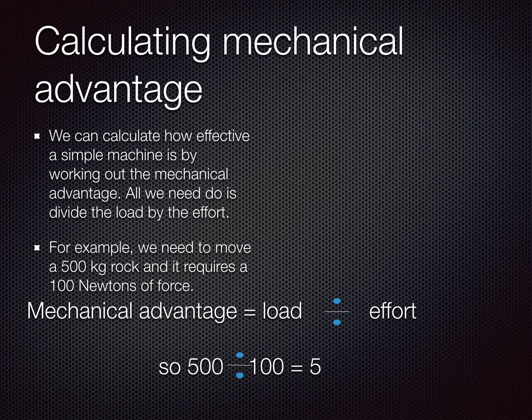To do that it's very simple — all we do is we measure the load and then we measure the effort that's required. For example, if we were going to move a 500 kilogram rock and it took us 100 newtons of force to do so, then the mechanical advantage is the load divided by the effort. So 500 divided by 100 is 5. Obviously, the higher the mechanical advantage, the more efficient the machine is.